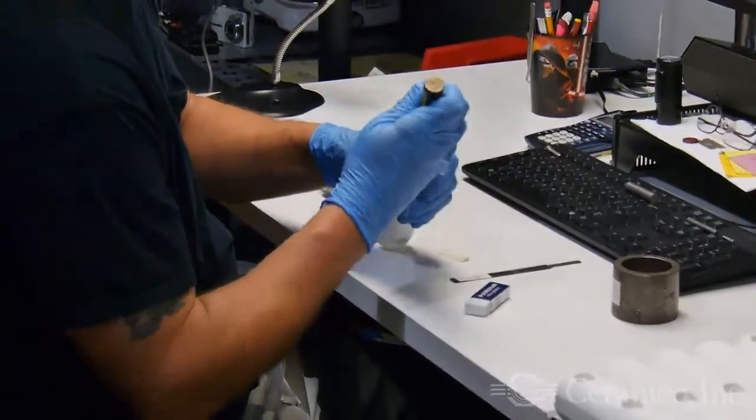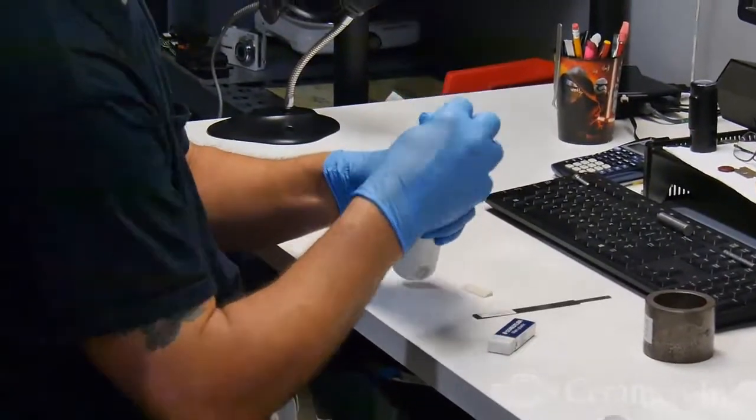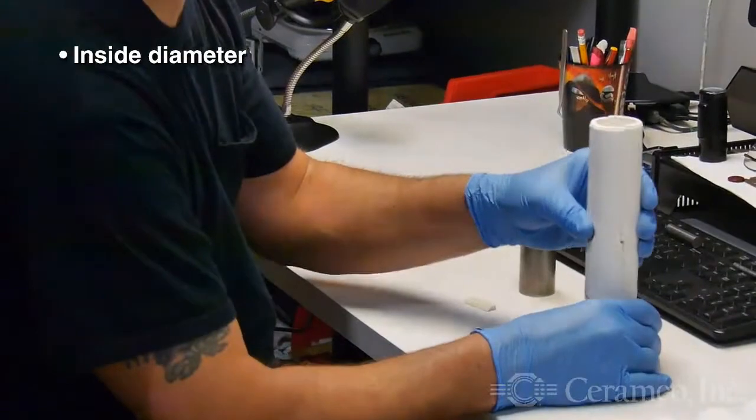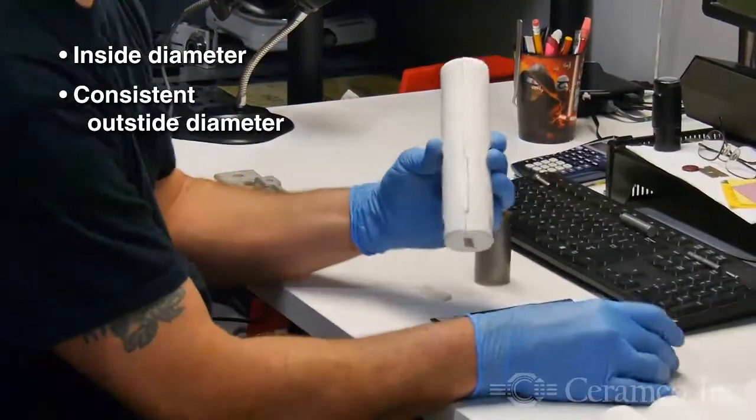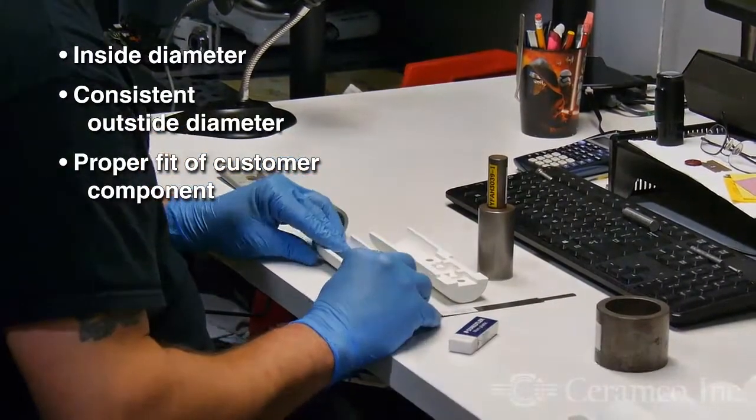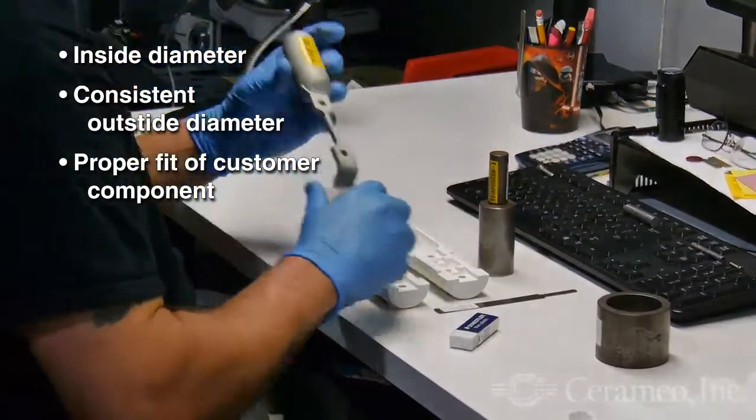In this example, the mated halves are expected to verify inside diameter, consistent outside diameter, and are then checked to verify proper fit of the customer's internal component.